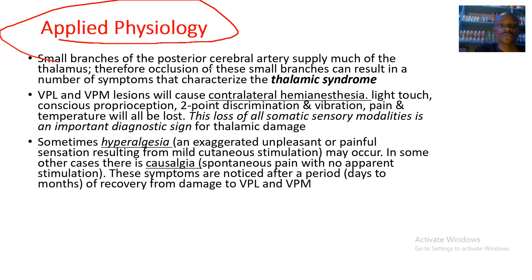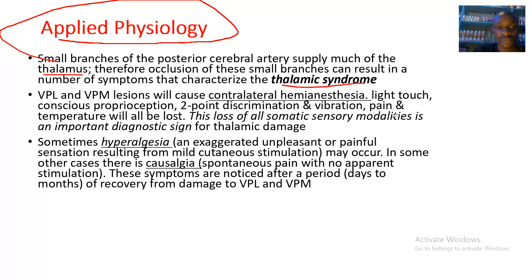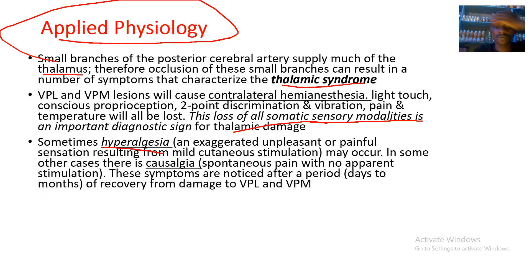In applied physiology, small branches of the posterior cerebral artery supply much of the thalamus, so occlusion of these branches can result in thalamic syndrome. Lesions of the ventral posterolateral and ventral posteromedial nuclei cause contralateral hemianesthesia — loss of light touch, proprioception, two-point discrimination, vibration, pain, and temperature. This loss of somatic sensory modalities is an important diagnostic sign. Hyperalgesia and causalgia — spontaneous pain with no apparent stimulation — may also occur, sometimes days to months after the initial damage.